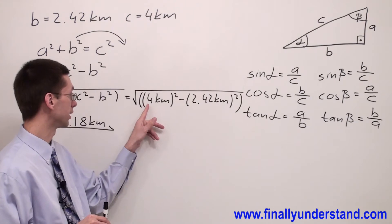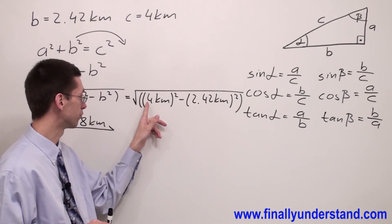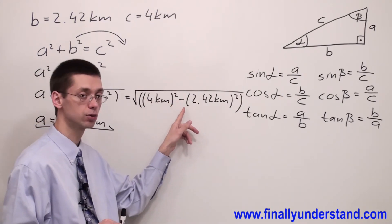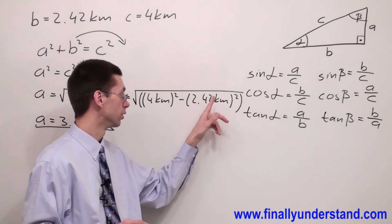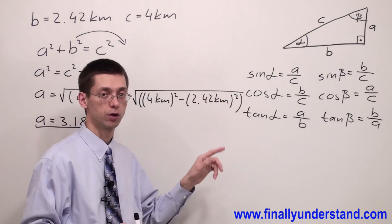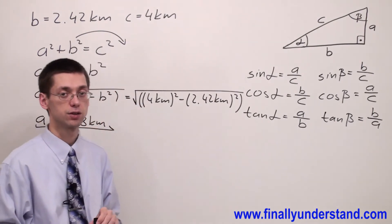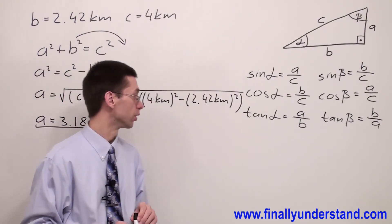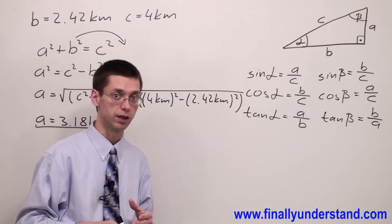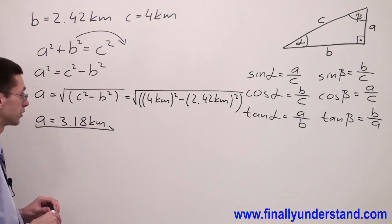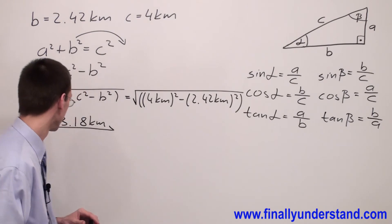Let me remind you: don't try to look for kilometers on your calculator — simply plug in the numbers: square root of (4 to the second power minus 2.42 to the second power). We use parentheses because I'm preparing you for more advanced calculations in the future where parentheses are extremely important when using calculators.